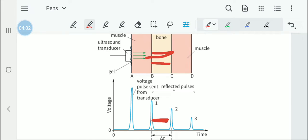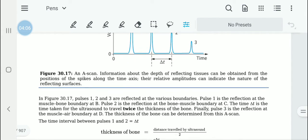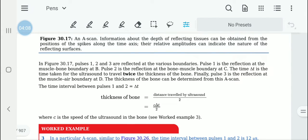I hope it makes sense to you. That principle is used in calculations. The delta T is the time taken for the ultrasound to travel twice the thickness of the bone.